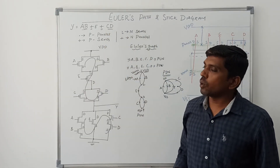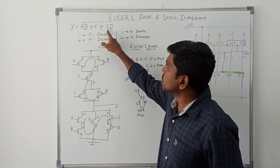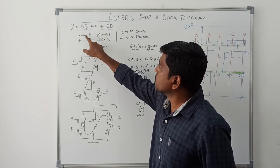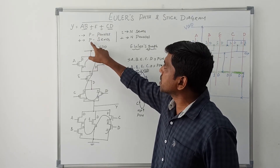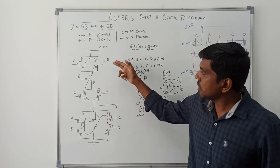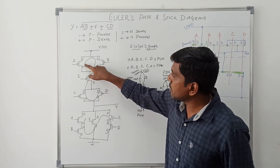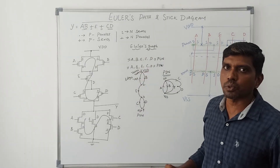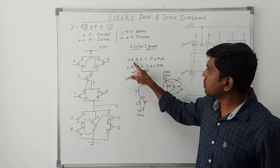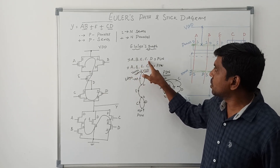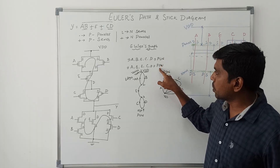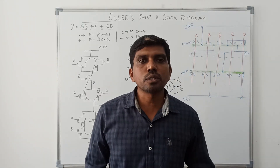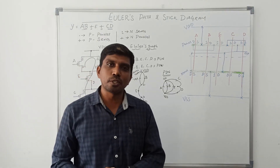In your examination, when the Boolean expression alone is given: first, read the Boolean expression and identify product terms and sum terms, then use the two rules — product present means PMOS transistor connected in parallel and plus present means PMOS transistor connected in series. Draw the CMOS logic diagram, then find the Euler path, then draw the Euler graph. You will get different types of solutions — any one is acceptable. I hope you understand the concept very well. If you are watching for the first time, kindly subscribe and support us to make more videos. Thank you.